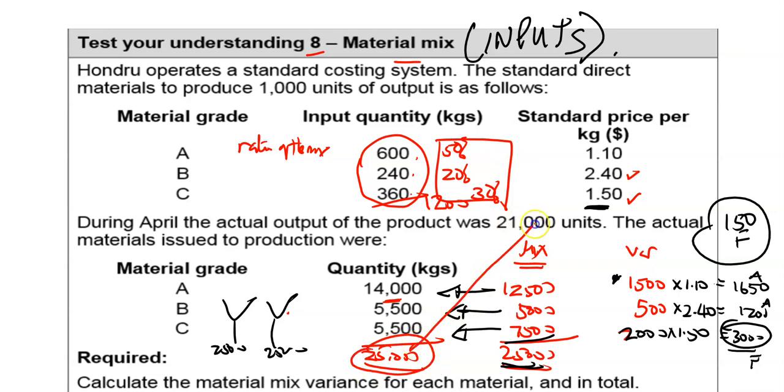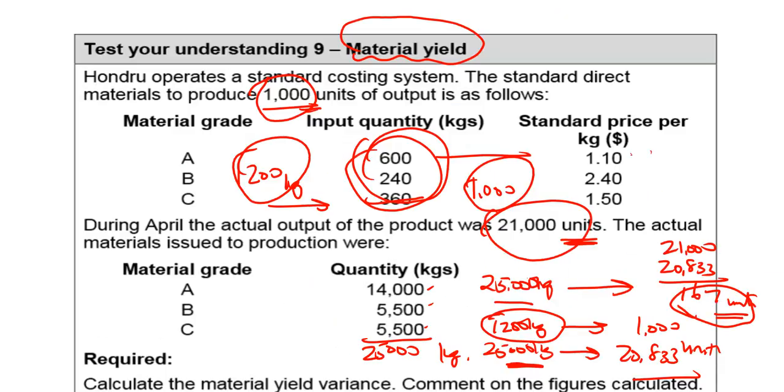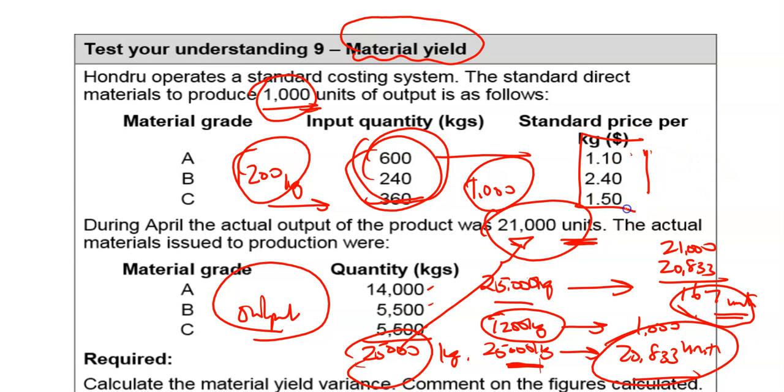25,000 kilograms yielded 21,000 units. The question here is what, how many units should 25,000 kilograms have yielded? Because I'm talking about output. That's the kind of way I'm looking at it. How many units should 25,000 kilograms have yielded? And it should have yielded 20,833. So we actually have more than it did, and therefore we can argue and we can then find the cost because we know what the standard cost is of making each unit.